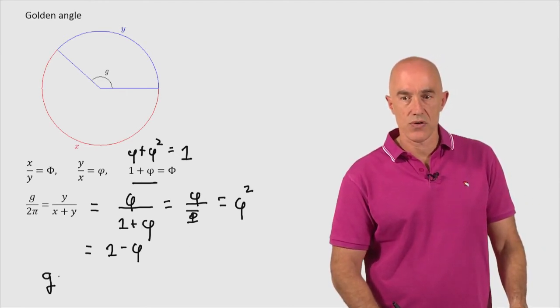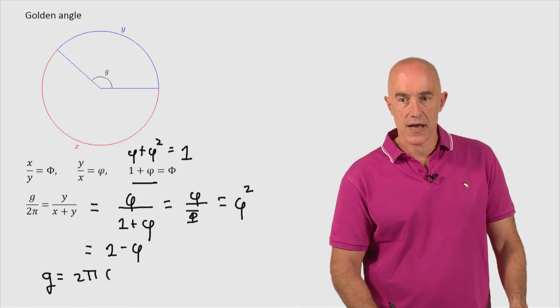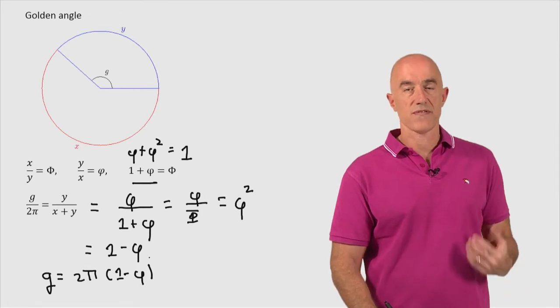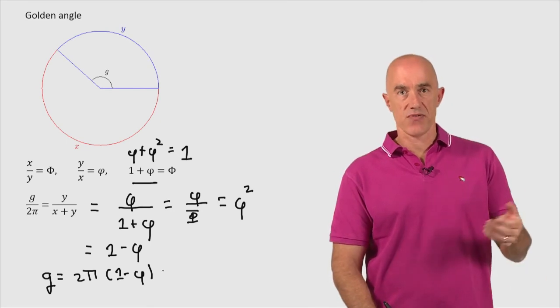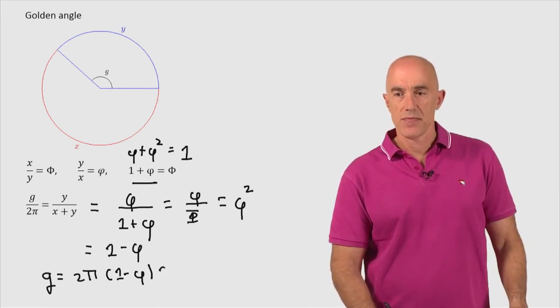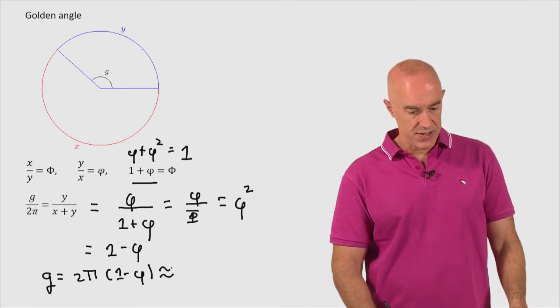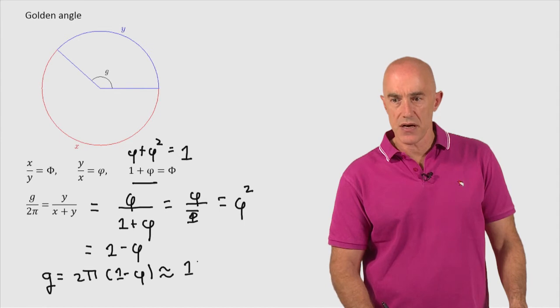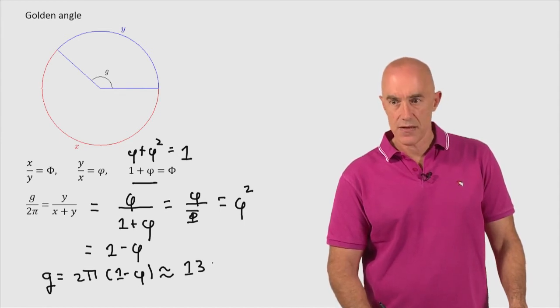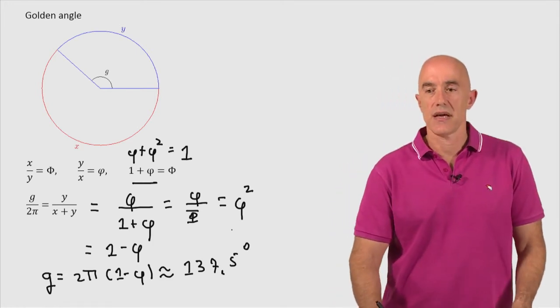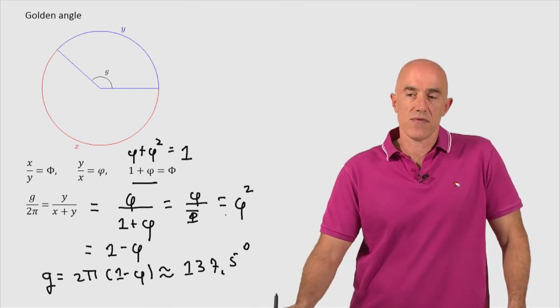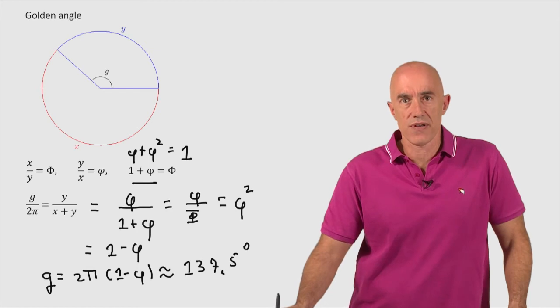Putting this together, we get the golden angle then, multiplied by 2π is 2π times 1 minus the golden ratio conjugate, 1 minus phi. This is in radians if we put in 0.618 for phi. But we can also put this in degrees. If we put this in degrees, this is approximately 137.5 degrees. And you will see that in the literature for the golden angle, 137.5 degrees.